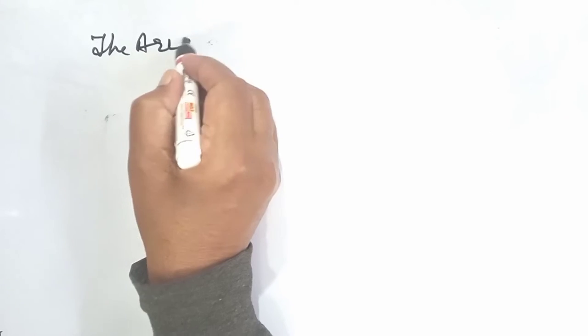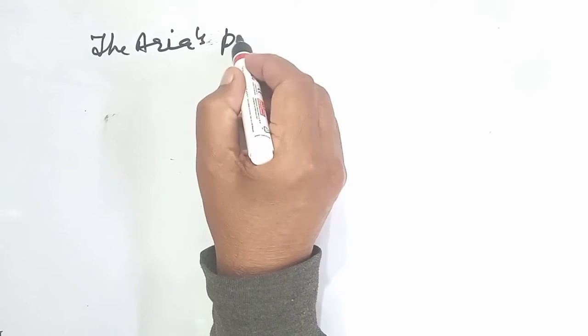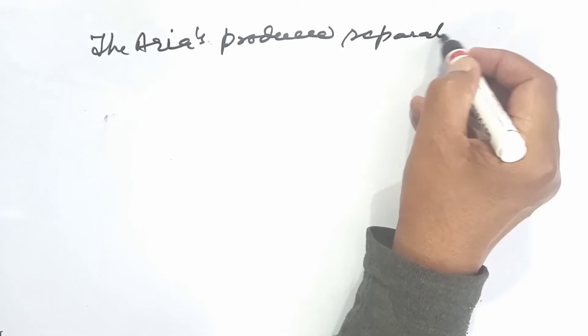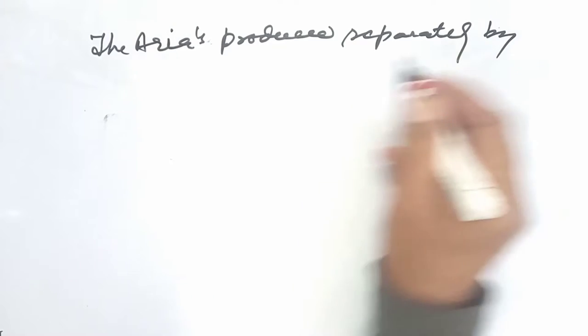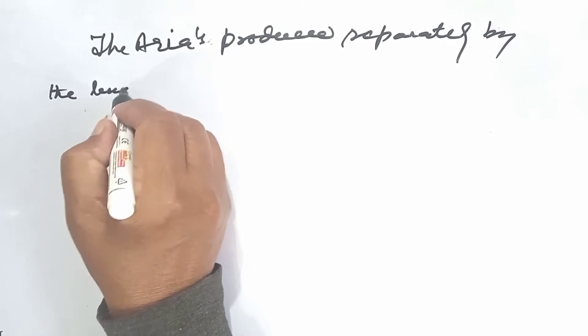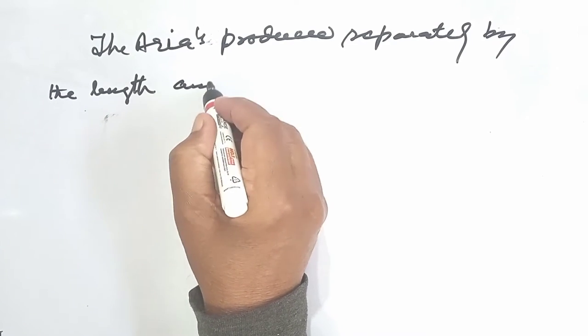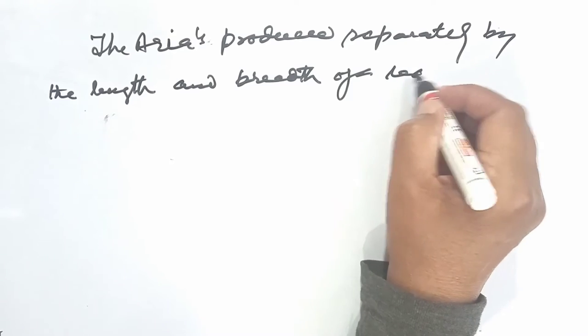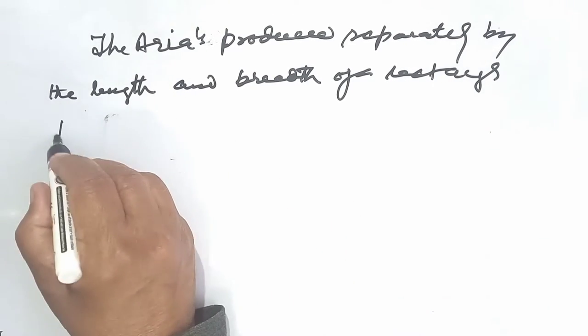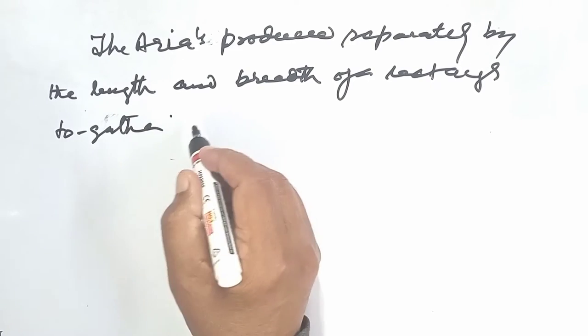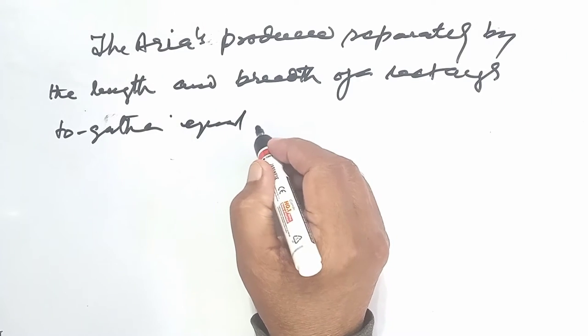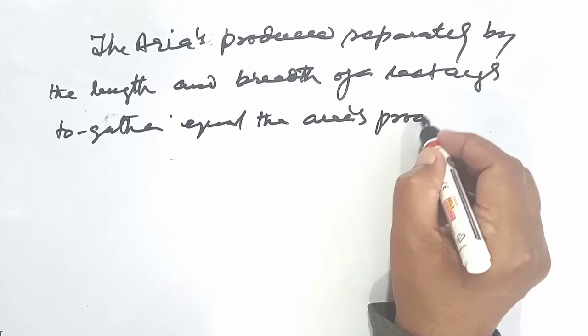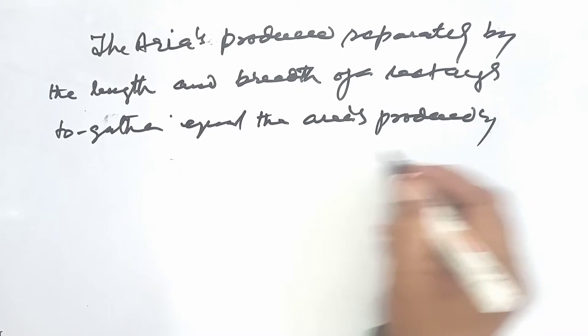The areas produced separately by the length and breadth of the rectangle together equals the areas produced by the diagonal.